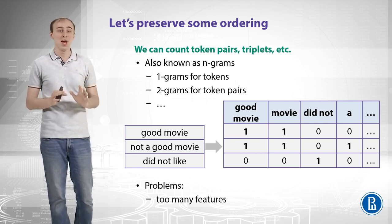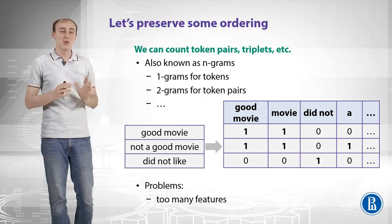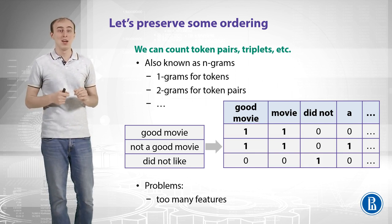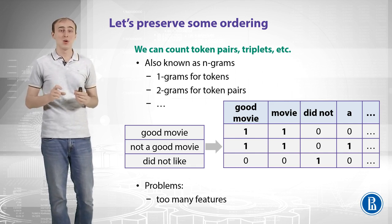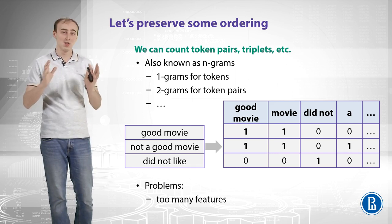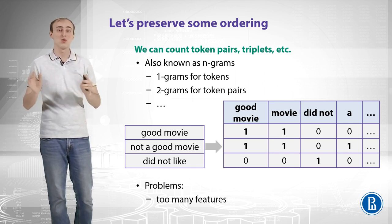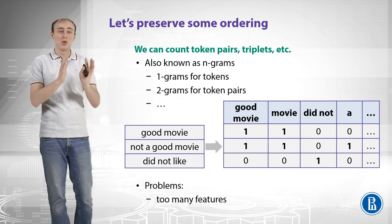Let's look at how it might work. We have the same three reviews, and now we don't only have columns that correspond to tokens, but we also have columns that correspond to token pairs. Our 'good movie' review now translates into a vector which has ones in columns corresponding to the token pair 'good movie', 'for movie', 'for good', and so forth. This way we preserve some local word order.